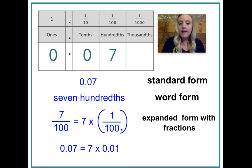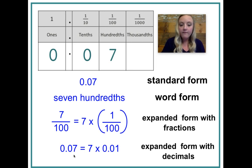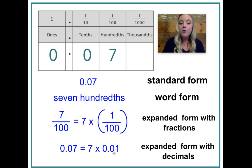And with this next one, it's still expanded form — same thing, just with decimals. When you have this seven hundredths, that's just seven groups of one hundredth.